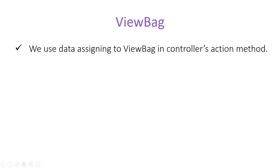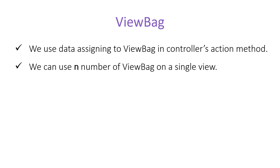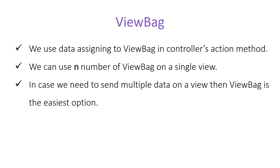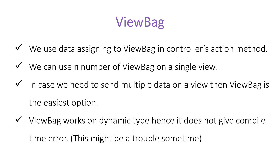We assign data to ViewBag in the controller's action method. We can use any number of ViewBag properties on a single view — just like we used three ViewBag properties on one index view. When you need to send multiple data to a view, ViewBag is the easiest option. ViewBag works on dynamic type, so it does not give any compile-time error, which can be troublesome if you mistype a property name.